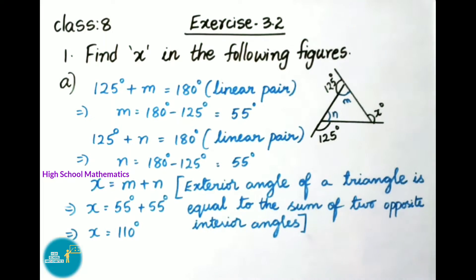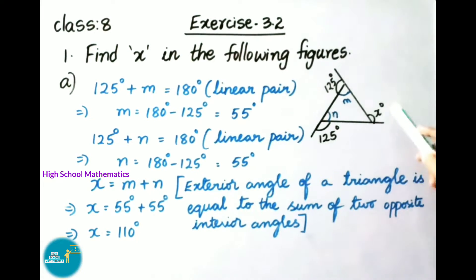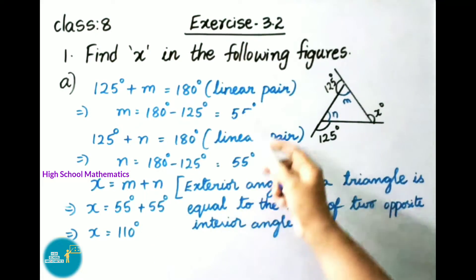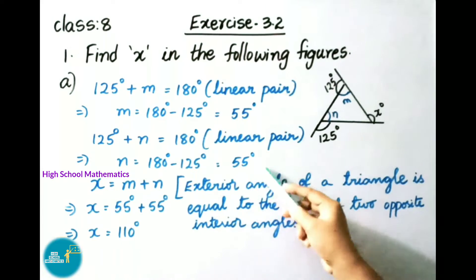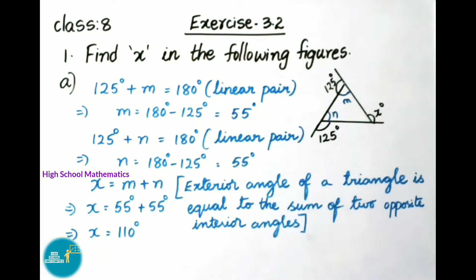By the exterior angle property of a triangle: the exterior angle of a triangle equals the sum of the two opposite interior angles. By this property, x equals M plus N. M is 55 degrees and N is 55 degrees, so x equals 55 plus 55, that is 110 degrees.